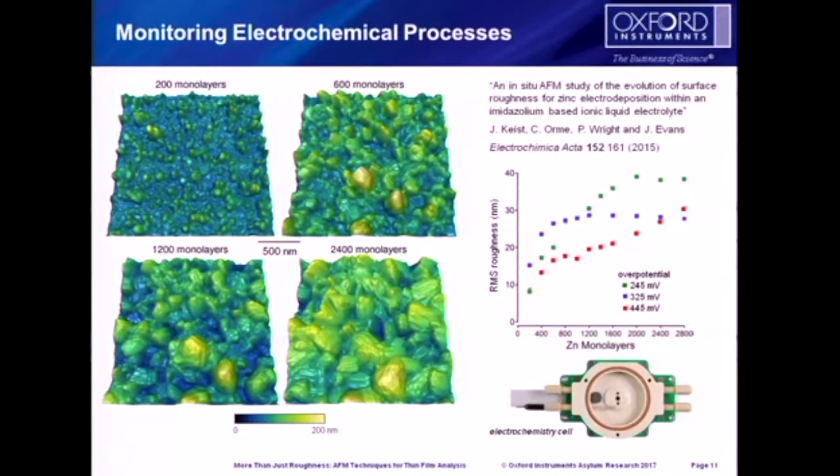We can also monitor electrochemical processes in situ. So in this example, changing the conditions caused the change in the roughness and different monolayers were grown on the surface. So you can see a correlation between the roughness and how many monolayers were grown on the surface that are in situ on the AFM. So electrochemical AFM capability is available on all the cypher microscopes. And you can operate in a wide range of pH and do some interesting measurements of in-situ characterization while changing the pH.